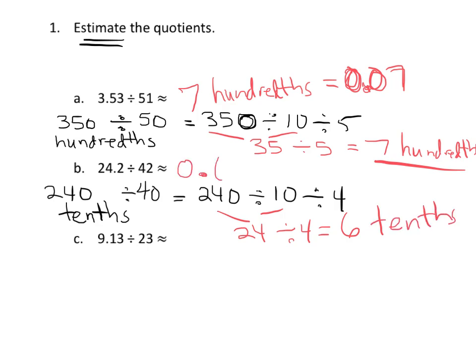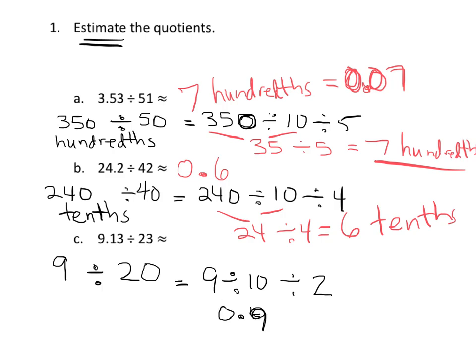The last estimation problem: 9.13, or 9 and 13 hundredths. I might just change that to 9, and round the divisor 19 to 20. In this case I'll say: 9 divided by 20, which we can think of as 9 divided by 10, divided by 2. So 9 divided by 10 is 0.9, and 0.9 — or 9 tenths — divided by 2 is 0.45.